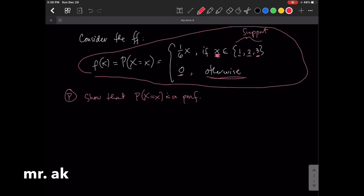First, the first condition. All probabilities should be greater than or equal to 0. So let's start with the probability that x equals 1, right, because x can take values in this support, and 1 is in the support.